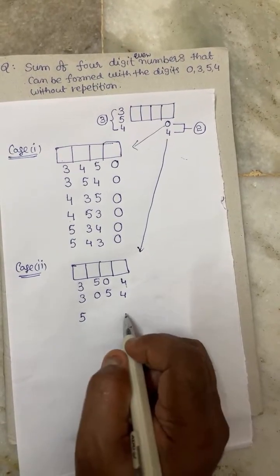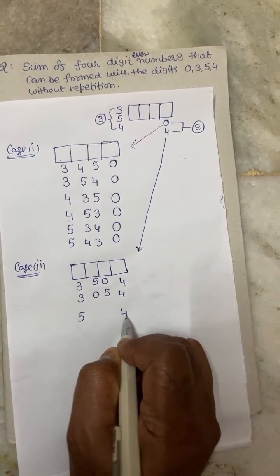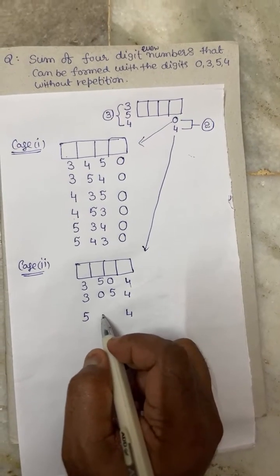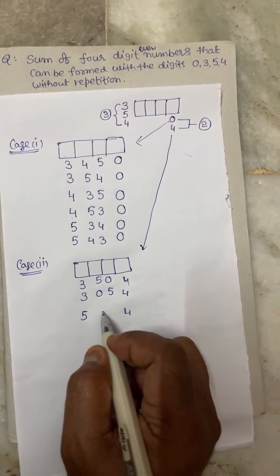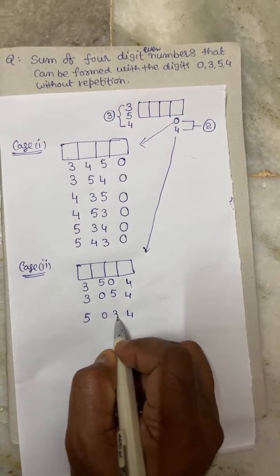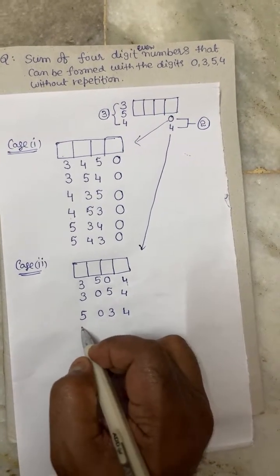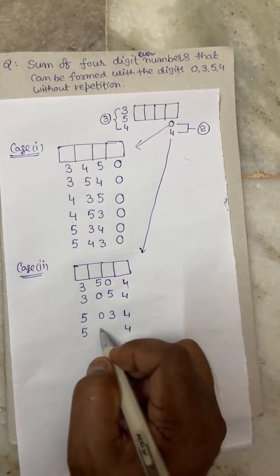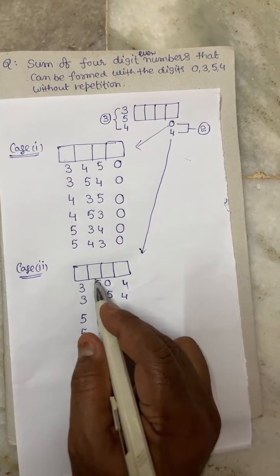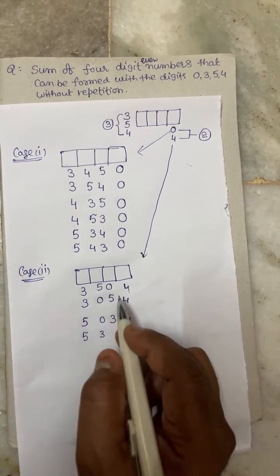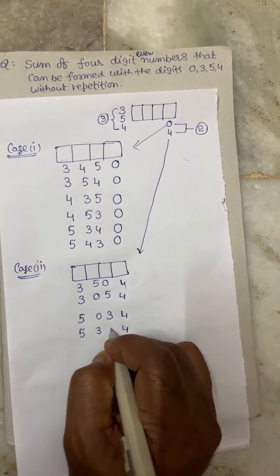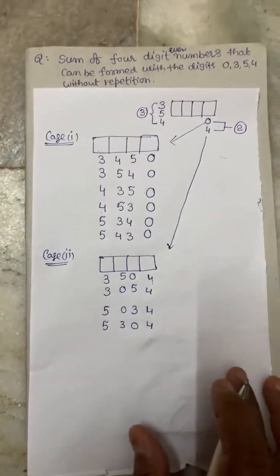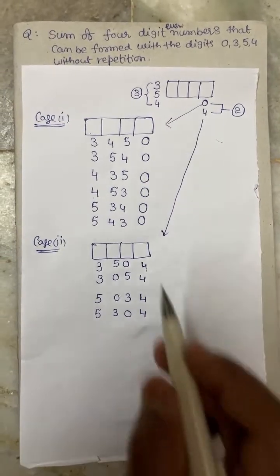Next, five will be in the last position and four will be in the unit place. The remaining digits are three and zero — so zero goes in the tens place and three in the hundreds place. Therefore five in the thousands, three in the hundreds, zero in the tens, and four in the units. These are all the possibilities we are getting.